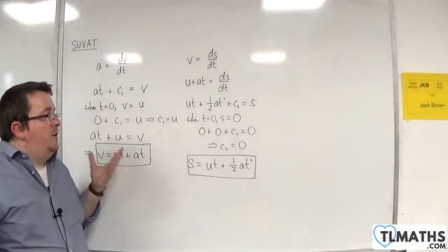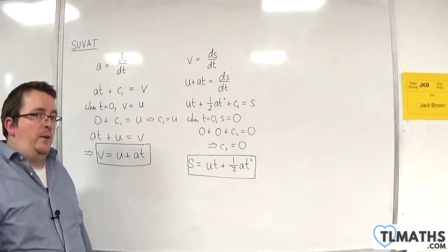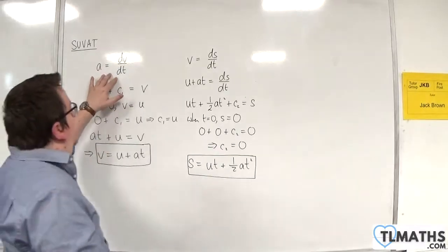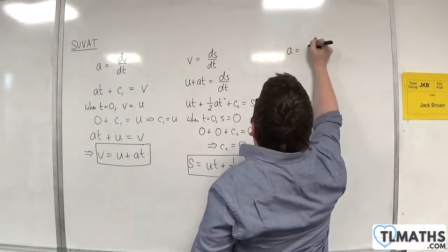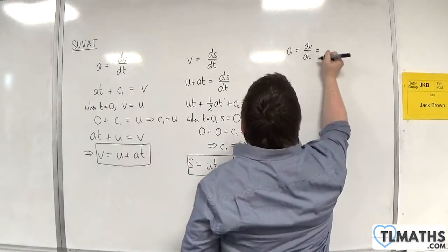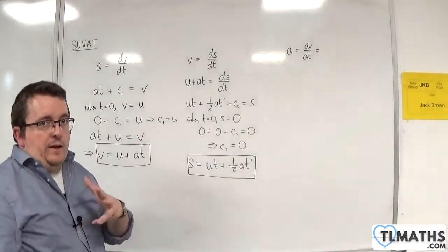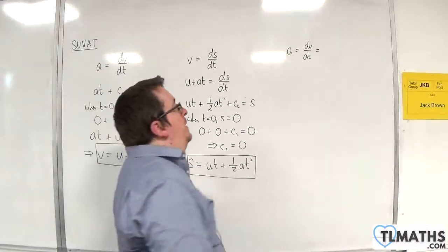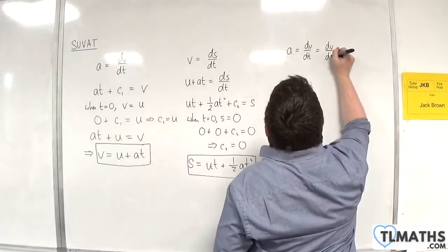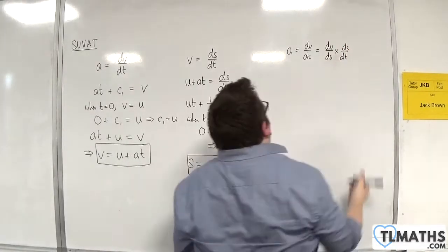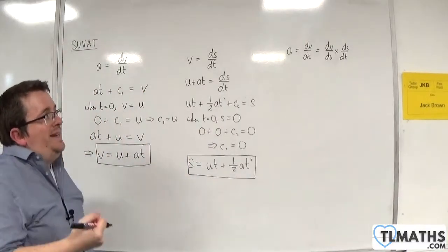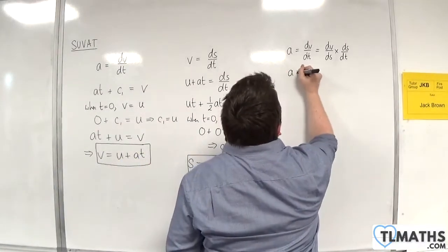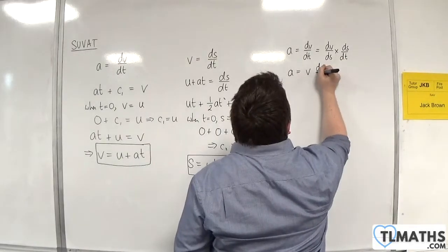But I'm going to show you an alternative way of getting to v² = u² + 2as, which is, for interest's sake. We return to a = dv/dt. This is where some second-year calculus comes in — I'm going to use the chain rule. The chain rule says I can write that as dv/ds times ds/dt. Now ds/dt is just v, so what I'm writing is a = v dv/ds.